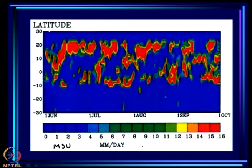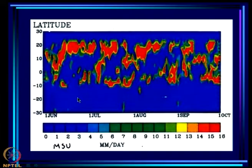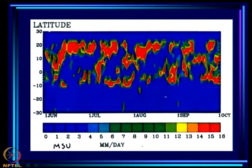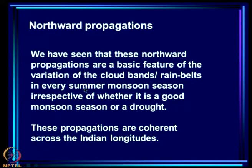The other feature is northward propagations of the band starting from the equatorial region and moving northward. This is from satellite MSU at 90 degrees east for the specific year 1986. You also see here active and weak spells — this is a weak spell, this is an active spell — and these are the northward propagations. These are the two major features on the intra-seasonal scale.